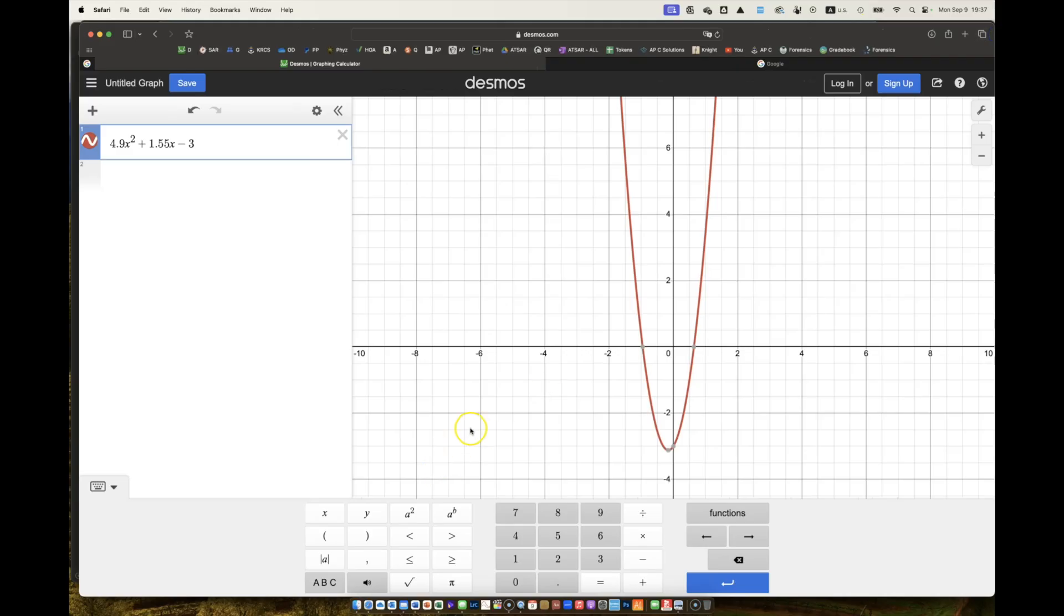What am I going to graph? When I graph this, I get two zeros. One is negative, which cannot be applicable here. Time is never negative, so I get the 0.64 for my time.